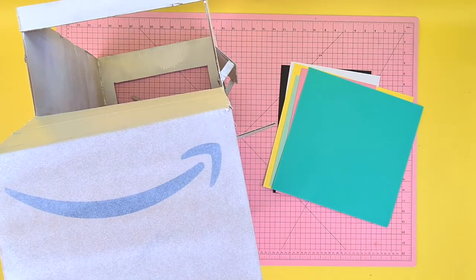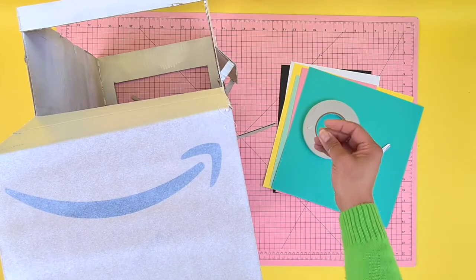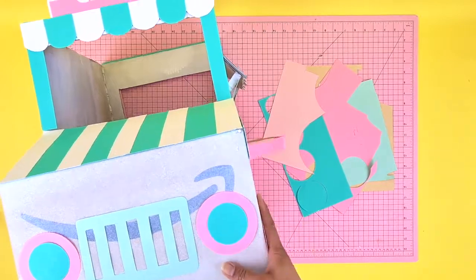Once this is dry, cut the coloured cardstock into shapes to decorate your van in any way you want. Your pet is going to love this!